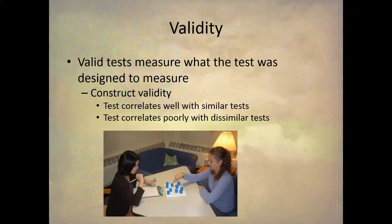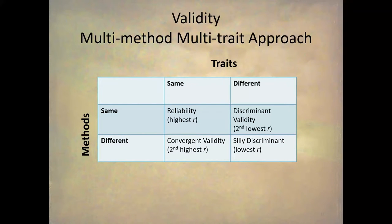The way we generate information about this is through the construct validity method. We assume that a test should correlate well with similar tests and correlate poorly with dissimilar tests. If we find that's true, then we have evidence for construct validity. The way we normally do this is through a multi-method, multi-trait approach.